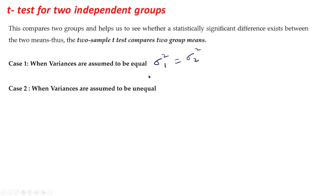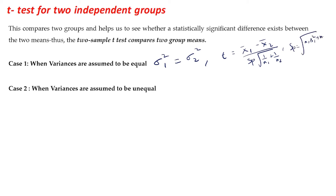If this is the case, then the test statistic t is given by x1 bar minus x2 bar upon the pooled variance sp into root of (1 by n1 plus 1 by n2), where sp equals root of (n1·s1² + n2·s2²) upon (n1 + n2 − 2). This is what we saw in the previous video: how to find t, how to find the pooled variance, and how to proceed with hypothesis testing.